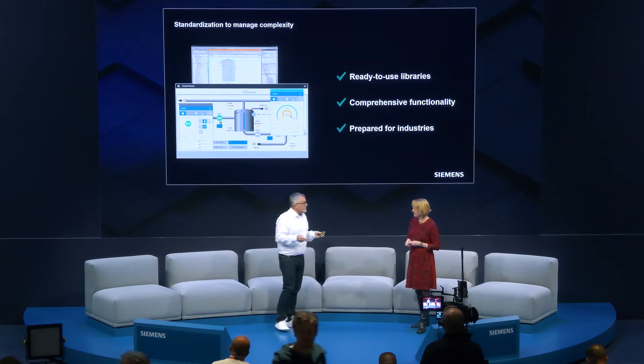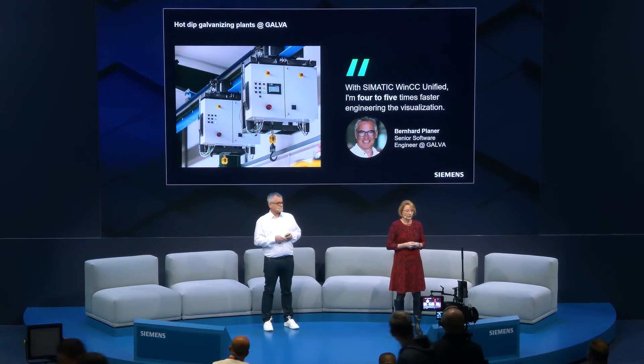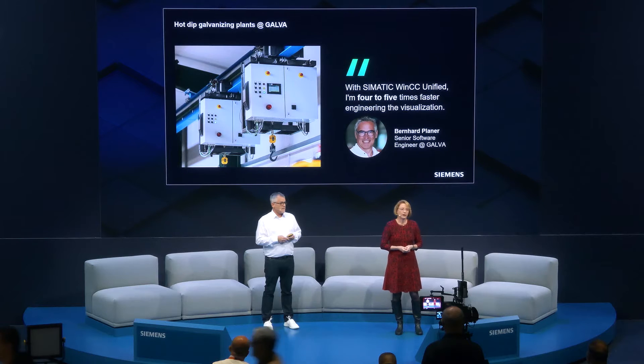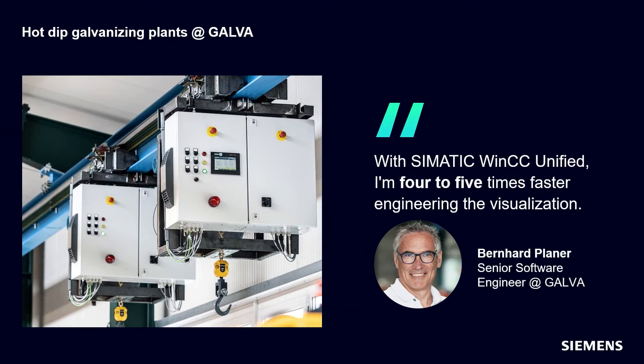Those were some examples for efficient engineering with the WinCC Unified system. On top, automated engineering — for example, C-Work — would be the ultimate step to boost your workflow. Here is the feedback of Bernhard Planner from a German integrator who realizes galvanization plants of different sizes. He redesigned his application completely and built up a new standard with WinCC Unified. After the initial effort, he is now able to say his engineering is four to five times faster compared to the former system. So it's really worth making a start with WinCC Unified.